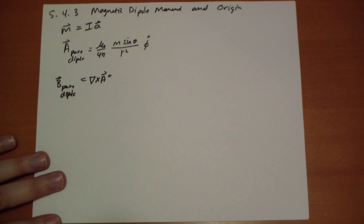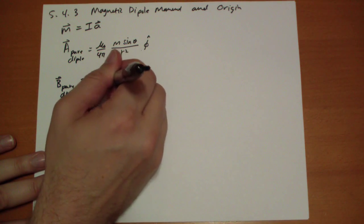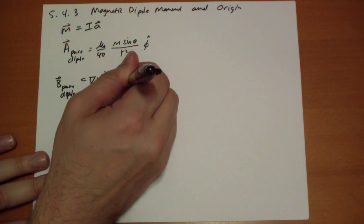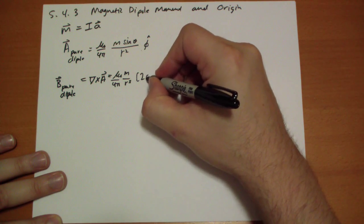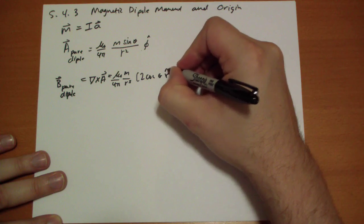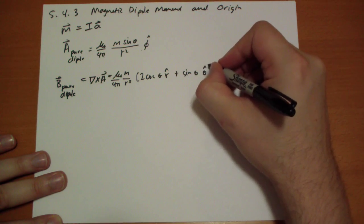When you work it out, it will be mu naught over 4 pi, m over r cubed, and there's two terms that survive: 2 cos theta in the r hat direction, and sine theta in the theta hat direction.